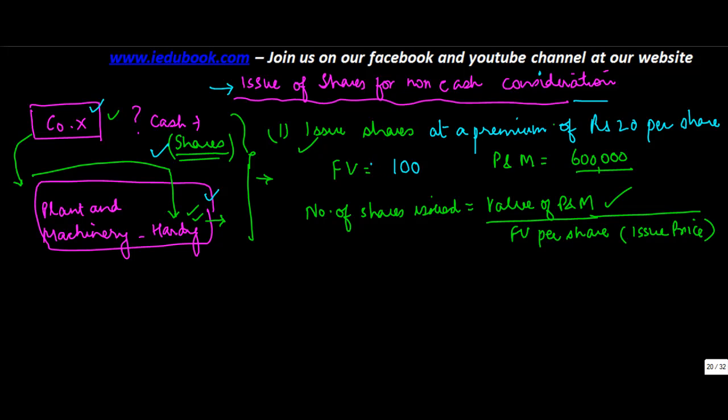So in this case what has happened is that a share which was valued at 100 has been issued at 100 plus 20, because there's a premium of 20 rupees. The value of the plant and machinery that it took is 6 lakh.